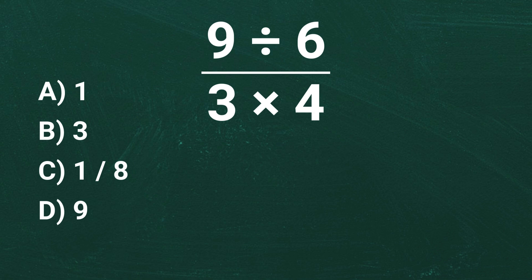We have 9 divided by 6 all divided by 3 times 4. First let's simplify the denominator. In the denominator we have 3 times 4, multiplying them gives us 12. So the expression now looks like this.